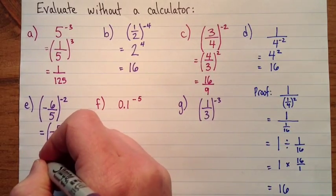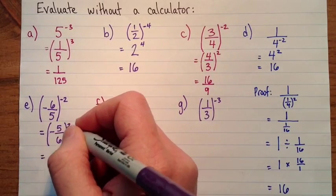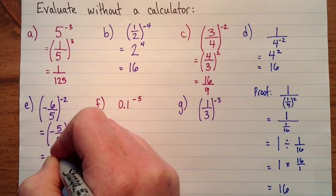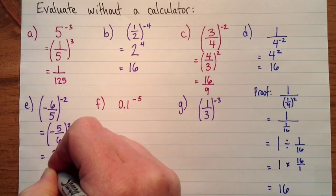Okay, and now negative 5 over 6 times negative 5 over 6, because I'm squaring it, that's going to be positive, and it will be 25 over 36.